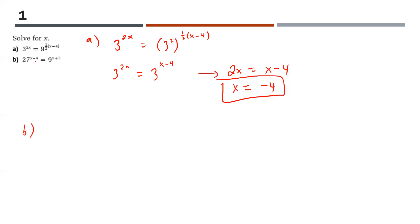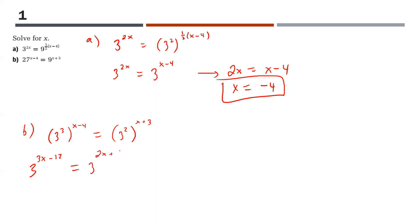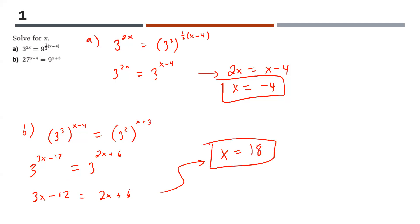For part B: 27 to the power of x minus 4 equals 9 to the power of x plus 3. Both can have a base of 3. 27 is 3 cubed, so we get 3 to the power of 3(x minus 4) equals 3 to the power of 2(x plus 3). Using power of a power, that's 3 to the power of 3x minus 12 equals 3 to the power of 2x plus 6. Setting the exponents equal: 3x minus 12 equals 2x plus 6, so x equals 18.